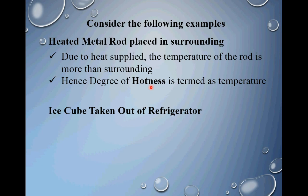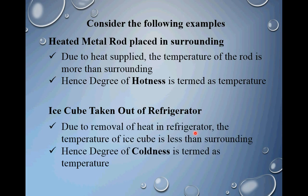Consider another example: an ice cube taken out of a refrigerator. A refrigerator is a device which consumes power and absorbs heat from a low temperature body and supplies it to a high temperature body — it removes heat from the bodies kept inside. So due to removal of heat in a refrigerator, the temperature of the ice cube is less than surrounding. Hence, degree of coldness is termed as temperature.